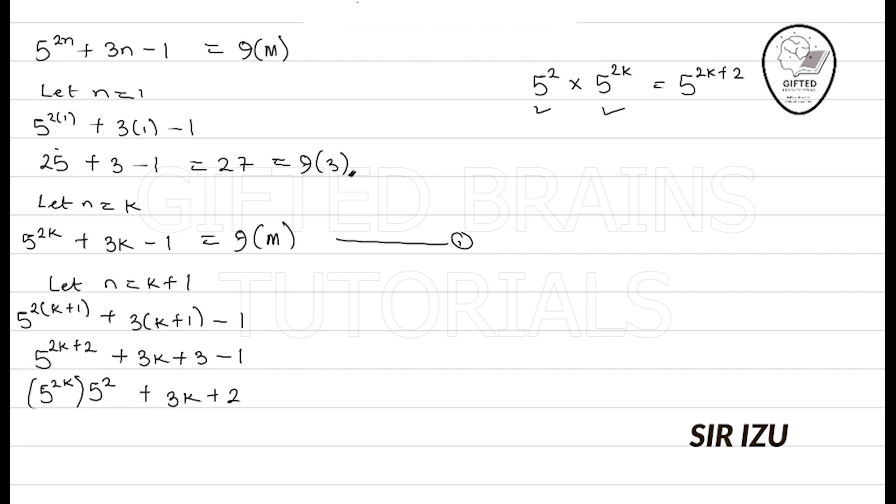Now, the 5^2 can be simplified to be 25. So, I have 25 now into 5^(2k) + 3k + 2.